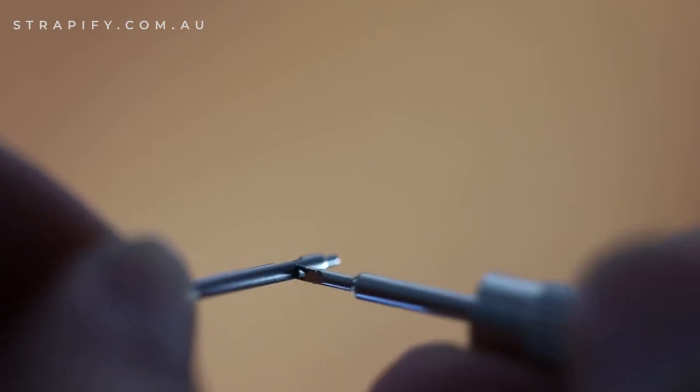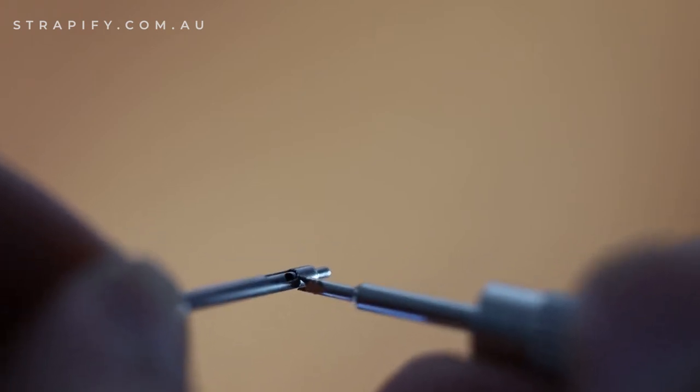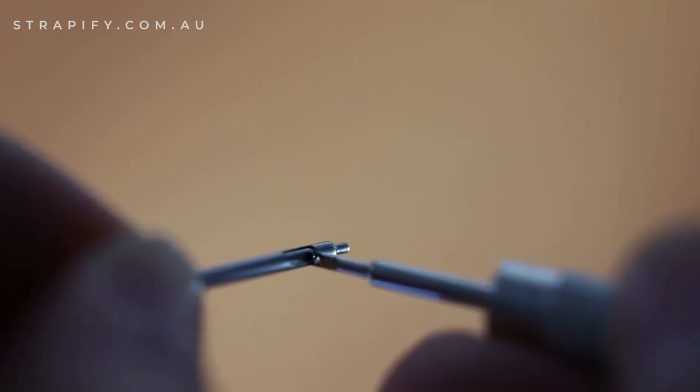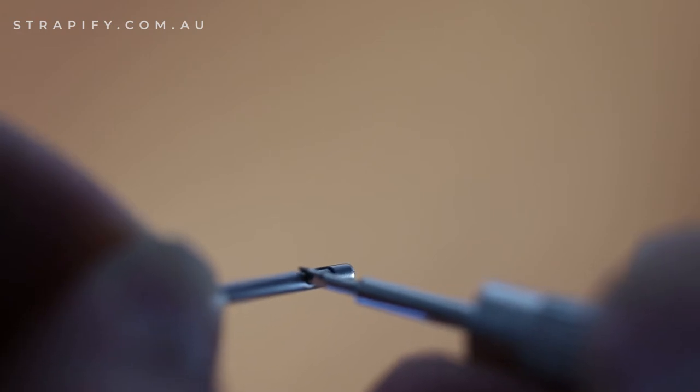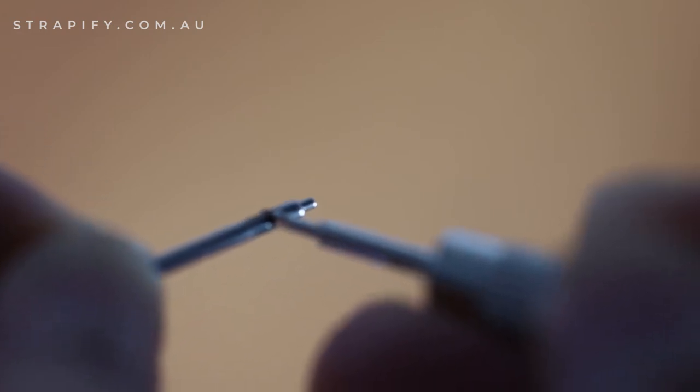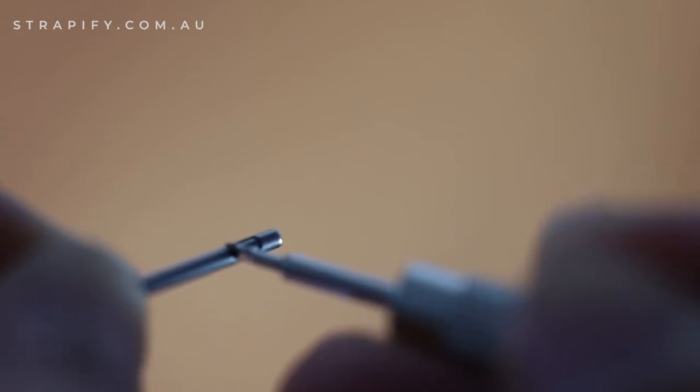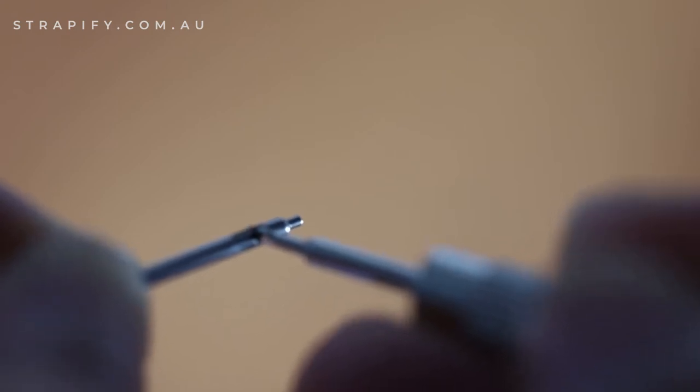Once you can see the hole, you just need to put the spring bar tool or pin inside the hole and slide it across to engage the spring bar.